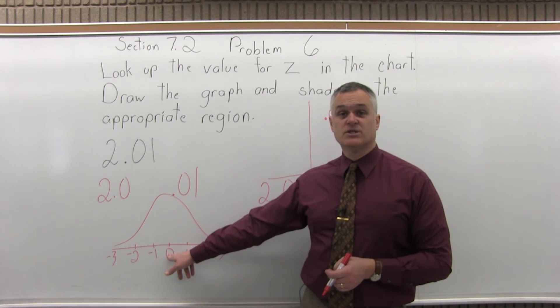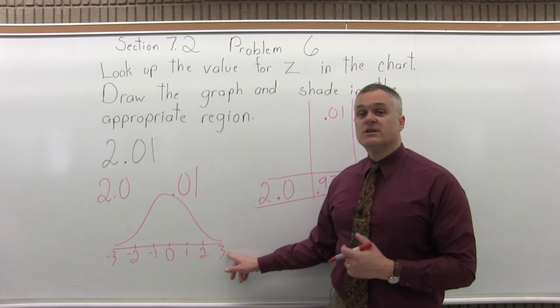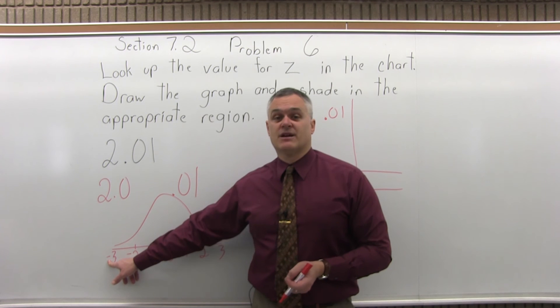0 being 0 standard deviations away from the average because the average is in the center. 3, 3 standard deviations larger than the average. Negative 3, 3 standard deviations less than the average value.